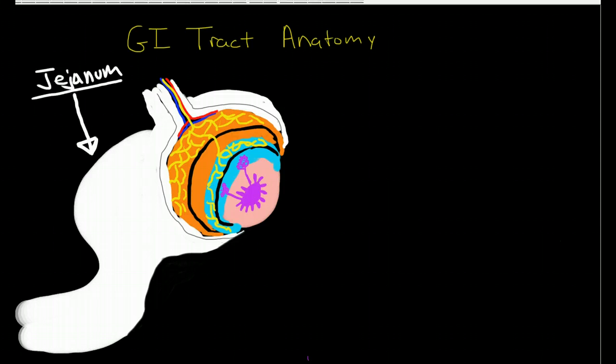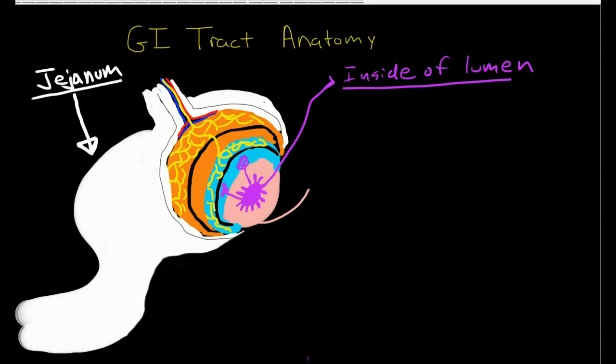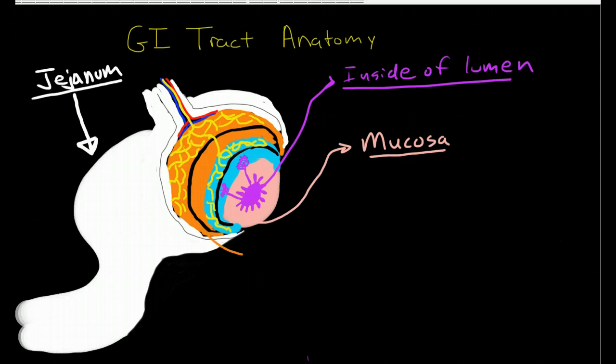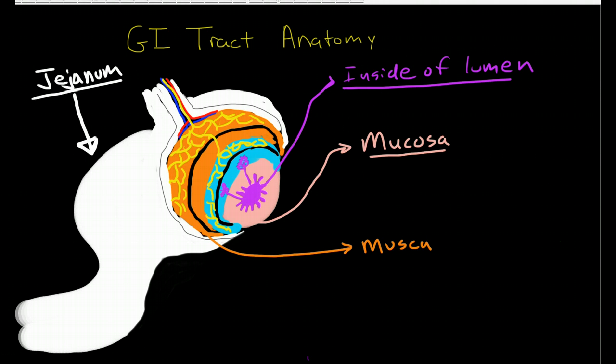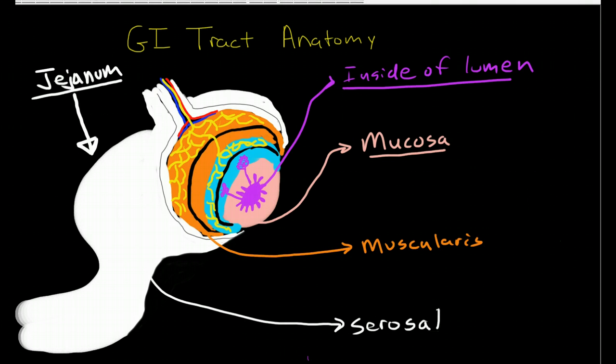Here, this dark pink layer is the lumen itself, so this is the inside of the lumen just to orient you. And then we have the three main layers. This pink section here is the mucosa, and this orange section here is the muscularis, and outside of the muscularis is the serosa or mesentery, you can call it either one.